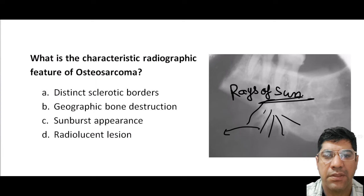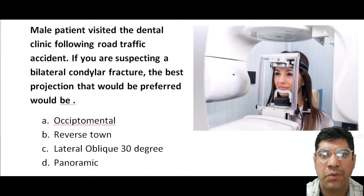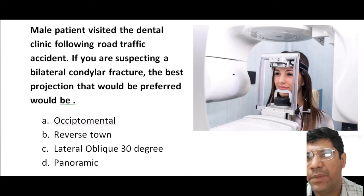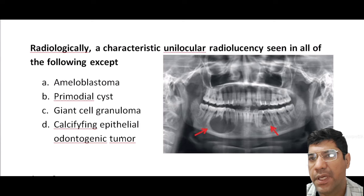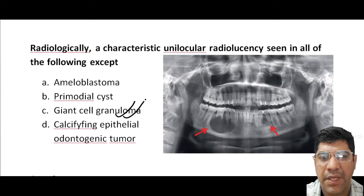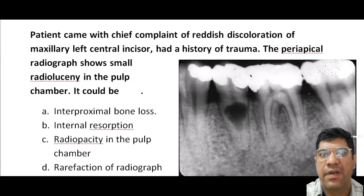A male who visited the dental clinic following a road traffic accident with suspected bilateral condylar fracture — the best projection would be the OPG. Regarding radiographic characteristics, unique unilocular radiolucency is seen in all of the following except giant cell granuloma, which presents as a multilocular radiolucency and is a non-neoplastic lesion.